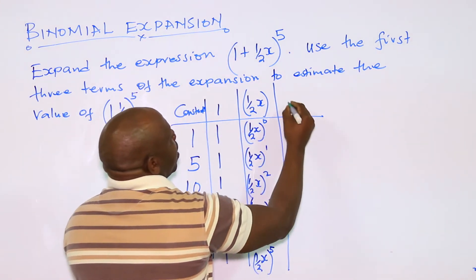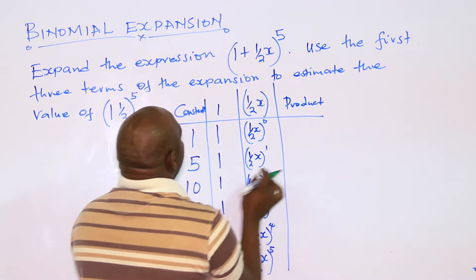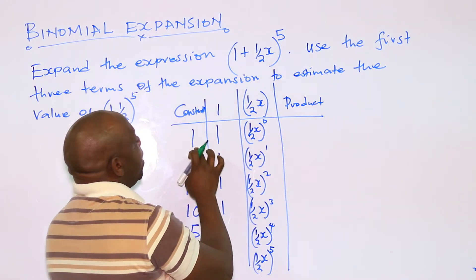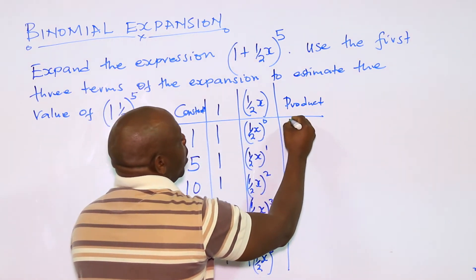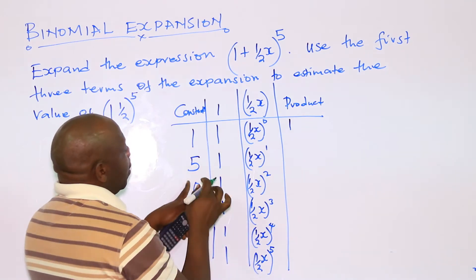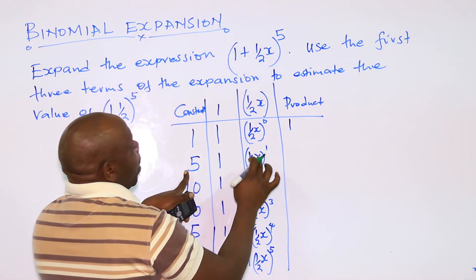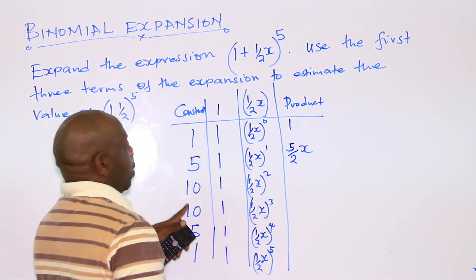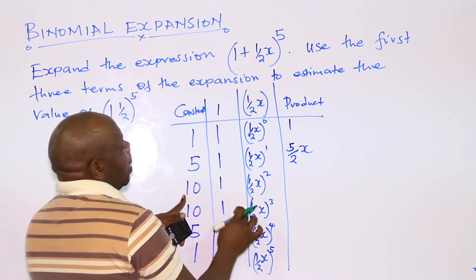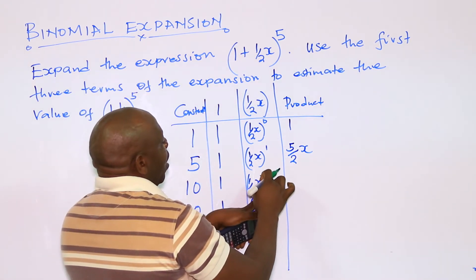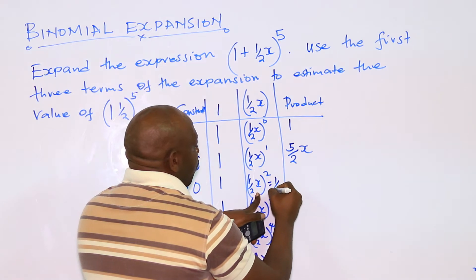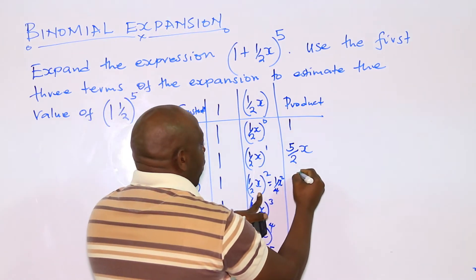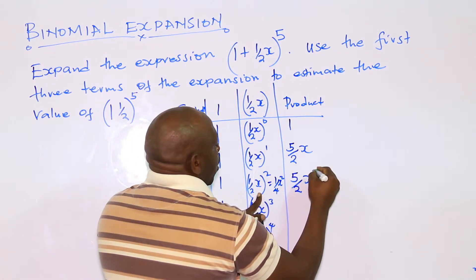From there, you get the product. For the first row: 1 × 1 × (½x)⁰ = 1. The next one: 5 × 1 × ½ gives 5/2 x. The next one: 10 × 1 × (½x)² — since (½)² = 1/4 — gives 10/4 = 5/2 x².